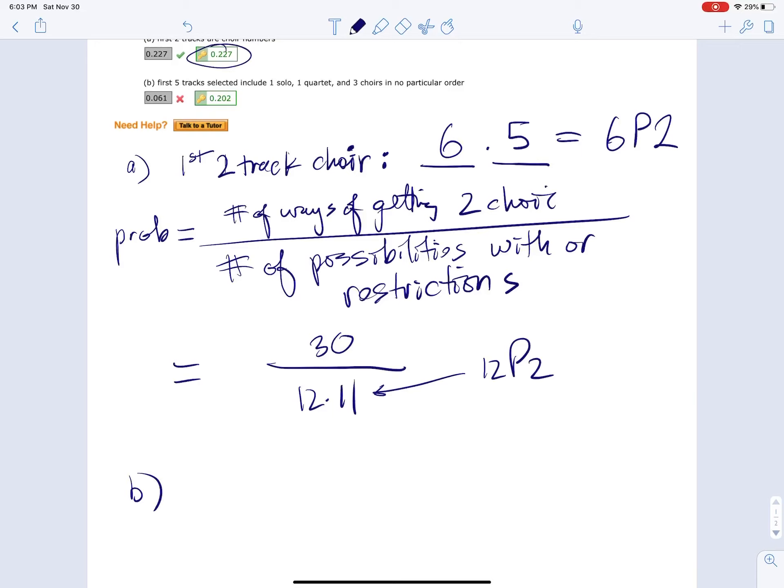If you calculate that, you'll get 0.227 as the answer. Part B says that the first five tracks selected include one solo, one quartet, and three choirs in no particular order. In this case, since it says no particular order, it's a combination.